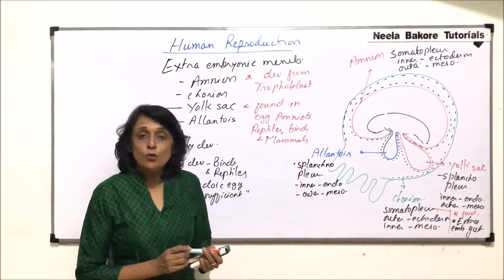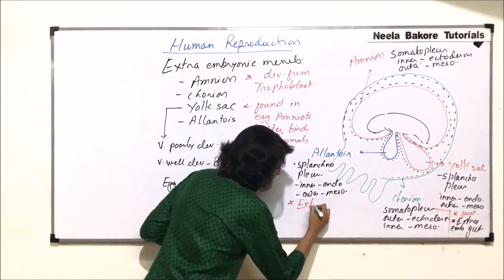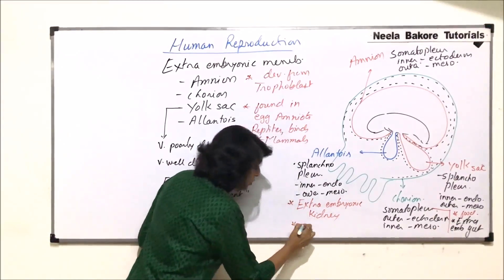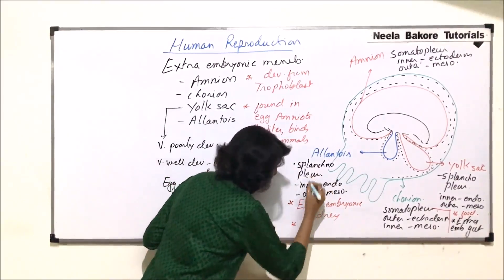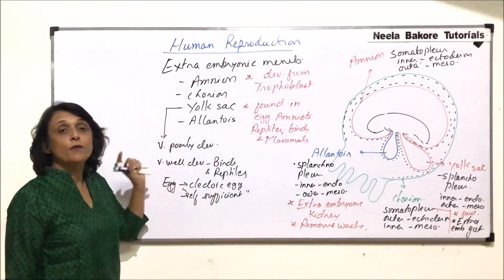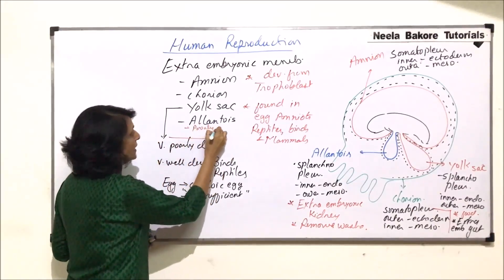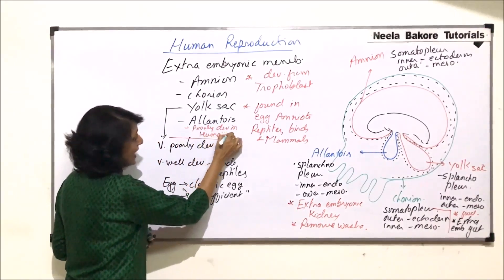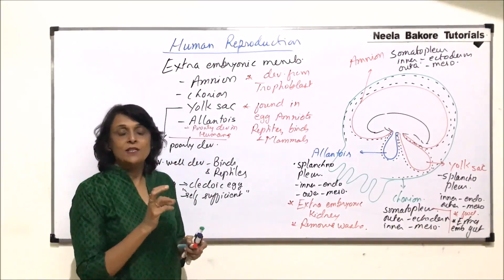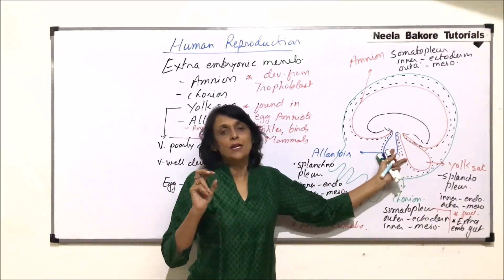Now let us come to allantois. Allantois stores all the nitrogenous waste material, so it acts as the extra-embryonic kidney — it removes waste from the embryo. Again, it is poorly developed in humans because the placenta is the structure which removes all waste from the fetus. As the placenta supplies nourishment and removes waste, both yolk sac and allantois are very poorly developed in humans.